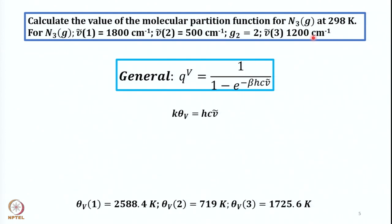For a linear molecule with 3 atoms, 3N − 5 gives 4 vibrational modes. There are actually 4 values of vibrational wave numbers, but 2 of them are the same — therefore the second one is doubly degenerate. This is the general expression for qv: substituting 1/(kT) into h × c × ν̄ for each mode gives a value.